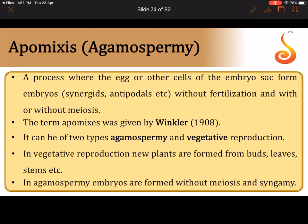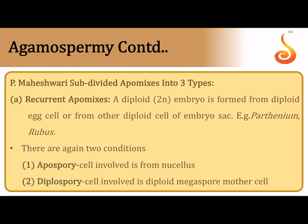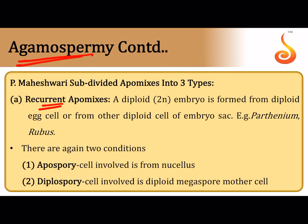Apomixis involves seed formation without fertilization, and possibly without meiosis. The term was provided by Winkler. It can be of two types: agamospermy and vegetative reproduction. In agamospermy, seed is formed without fusion of gametes and without formation of a zygote. In recurrent apomixis, a diploid embryo is formed from the egg itself — the embryo sac did not undergo meiosis but was produced by mitosis, making every cell diploid. There are two types: apospory (embryo sac from any nucellus cell) and diplospory (embryo sac from the megaspore mother cell).